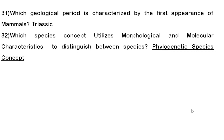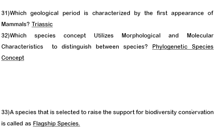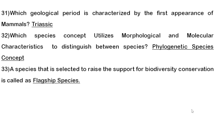Thirty-second question: which species concept utilizes morphological and molecular characteristics to distinguish between species? It is the phylogenetic species concept. You need to know about the biological species concept, evolutionary species concept, and ecological species concept. When morphological and molecular characteristics are mentioned, phylogenetic species concept is correct.